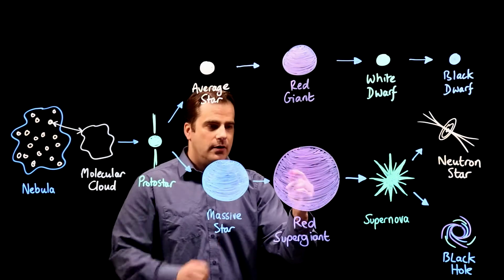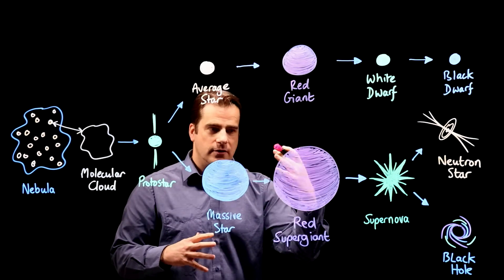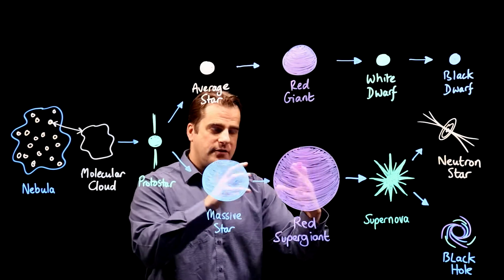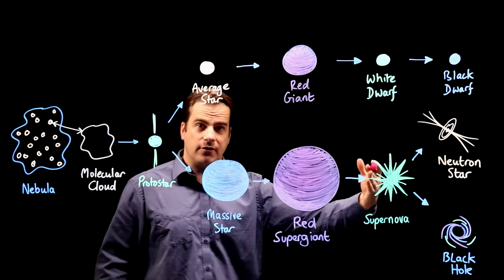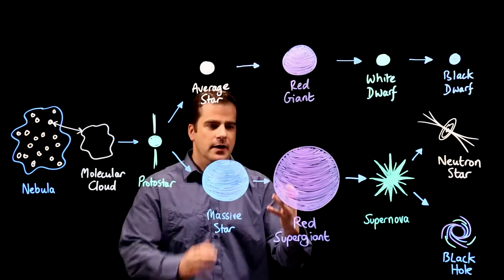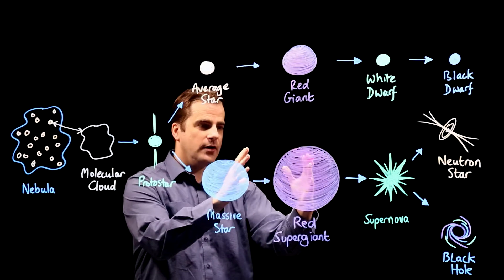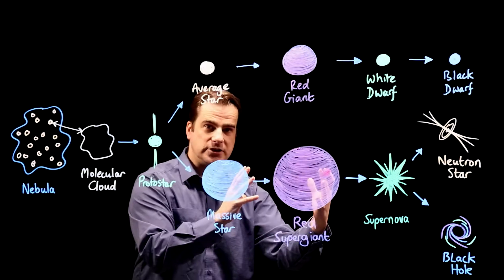So the carbon and the oxygen and the helium that's there, it keeps on fusing together to form heavier and heavier elements. And just like before, at this point it starts to expand into a red, in this case, supergiant.